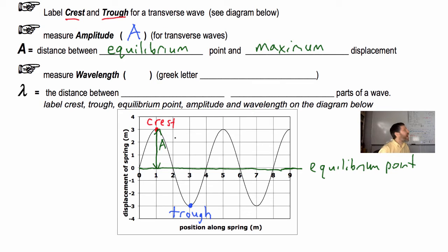Is there another place I could draw that on here? So I could go from the equilibrium point to the tip of the trough. So that's also the amplitude. That's also the maximum displacement, just in the opposite direction. So there is your amplitude.